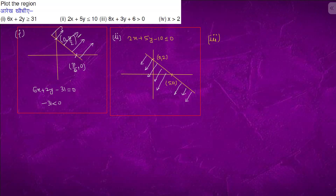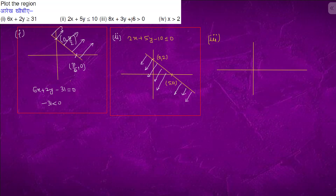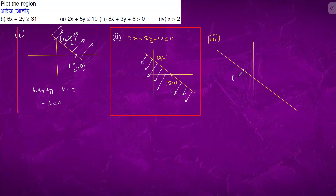For question three: 8x + 3y + 6 ≥ 0. First step is plotting the coordinate axis. When x is 0, y is -2, and when y is 0, x is -6/8, so the line is going somewhere like this. When x is 0, the point is (0, -2), and when y is 0, x is -6/8. Putting (0, 0) into the line gives 6 > 0, which is true, so this is the plot.